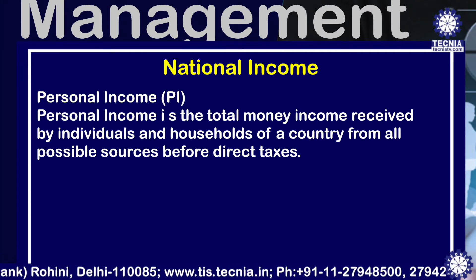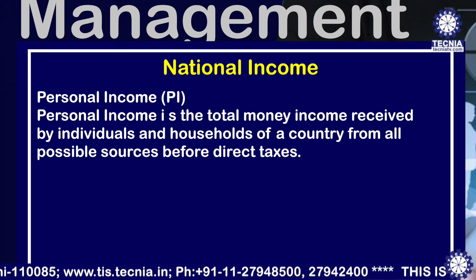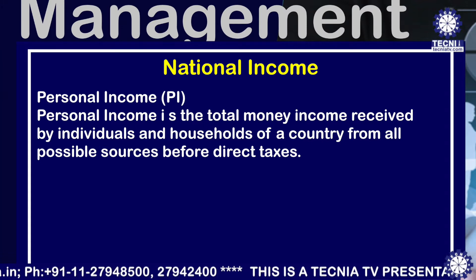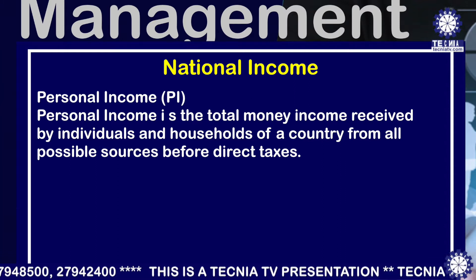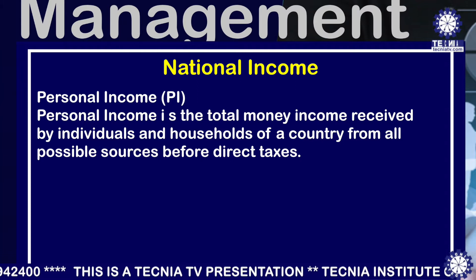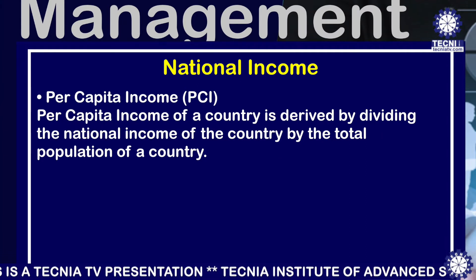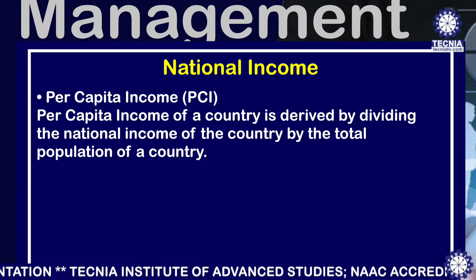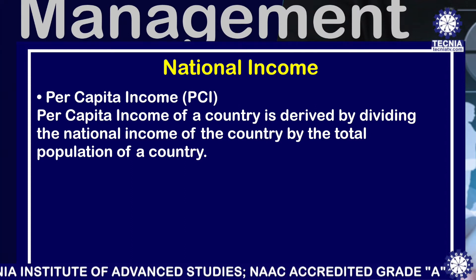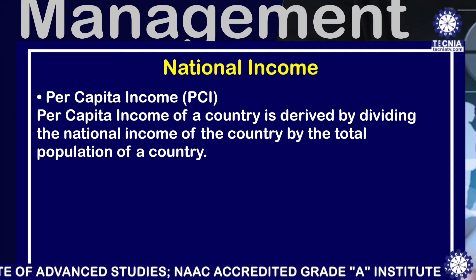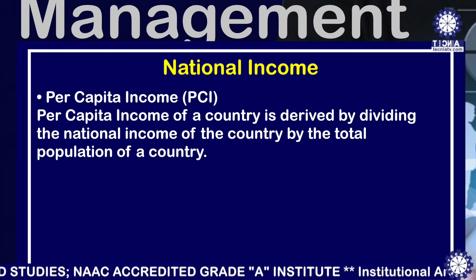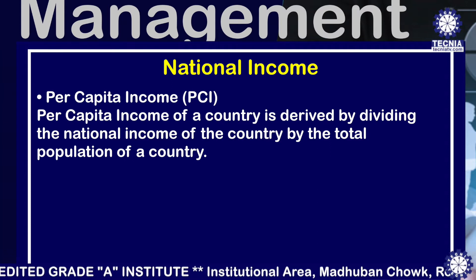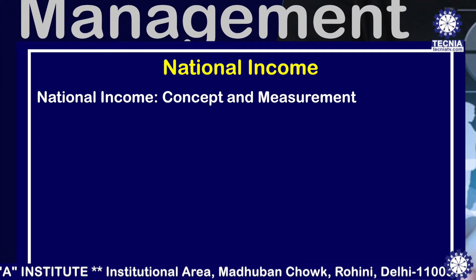The next concept is personal income — the total money income received by all individuals and households of the country from all possible sources before direct taxes. It is the income earned by an individual which can be used for spending purposes. Then per capita income, or PCI: it is derived by dividing the national income of the country for a particular year by the total population of the country. The more the national income and the lesser the population, the higher the per capita income will be.